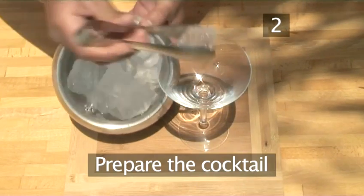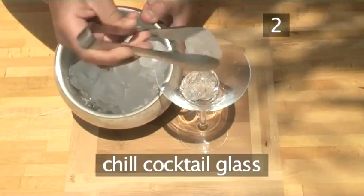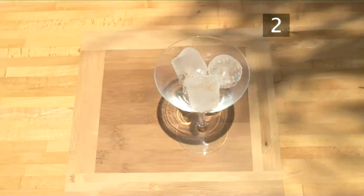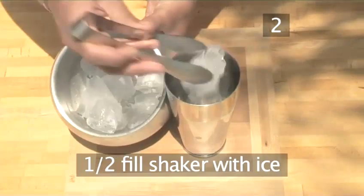Step 2: Prepare your cocktail. First, chill a cocktail glass with ice as Matildo is showing you. Then half fill the shaker with ice cubes.